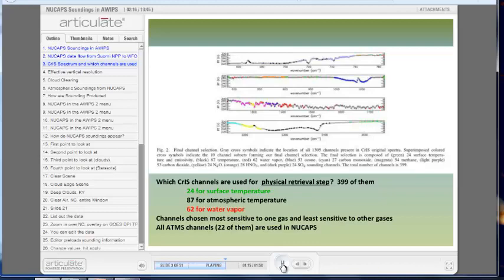The first guess for this is climatology. Think about what that means if you are in a regime that deviates significantly from normal. There are 24 channels, highlighted in green, from which surface temperature is retrieved, 62 highlighted in red, from which water vapor is retrieved. The channels selected are most sensitive to one gas while being less sensitive to other gases. They have high but not perfect spectral purity. All 22 ATMS channels are used in NuCAPs. The ATMS retrieval is the solution if either the cloud clearing fails or if the CRIS physical retrieval fails.